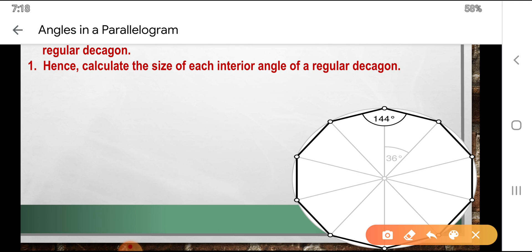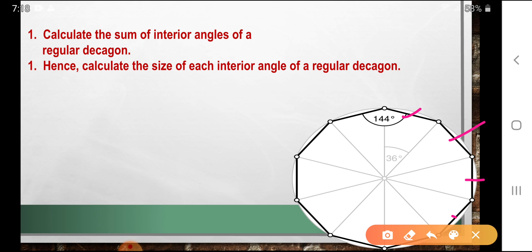This is you can see one, two, three, four, five, six, seven, eight. This is already ten sides, so we need to sum of interior angles.